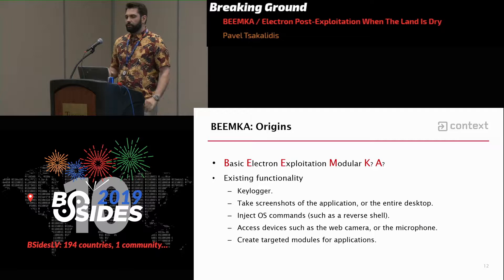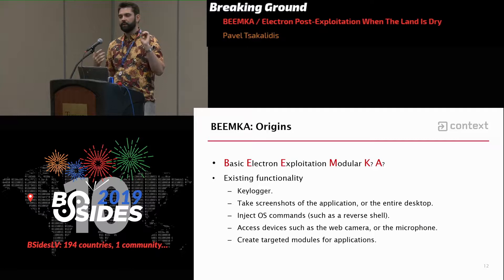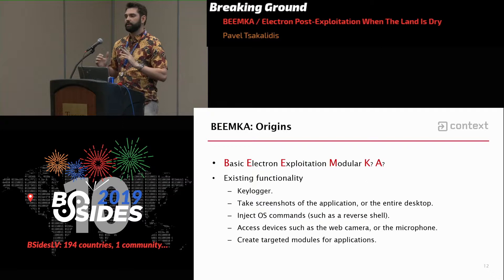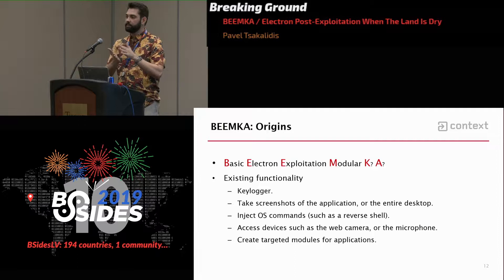To understand what makes this attack possible, we need to discuss how Electron works. Electron is based on ASAR files, which is another format of a compressed archive like ZIP or TAR. When you double-click an app, it runs Chromium and Node.js, then loads its bootloader from electron.asar, which prepares the whole environment. Once that's done, app.asar is loaded, which is effectively the source code of the application. If you open app.asar, it's effectively a web root — there's an index.html file that's loaded first, and then everything else loads after that.